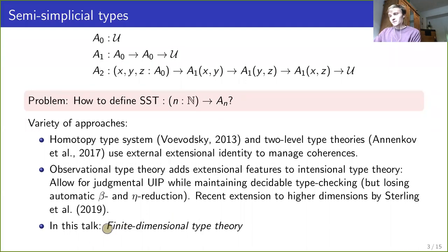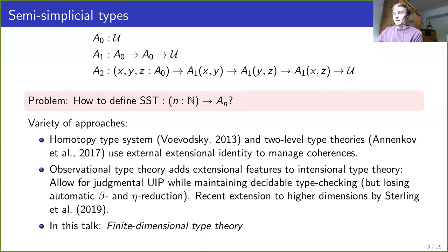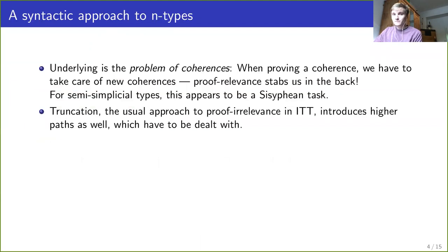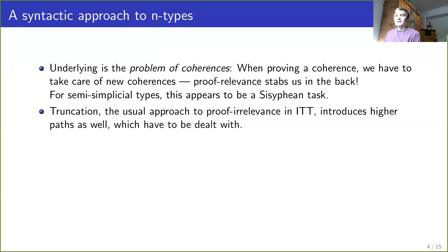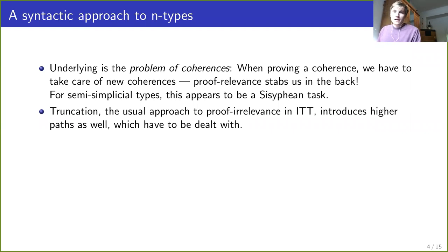The purpose of this talk is to introduce another variation of intentional type theory which might have beneficial properties that also allows for dealing with coherences. The problem of coherences that pops up when defining semi-simplicial types is that proof relevance is sometimes stabbing us in the back. Proof relevance is of course what makes type theory so nice since we have proofs as first-order objects, but at the same time this leads to new problems when we have to somehow structure these proofs.